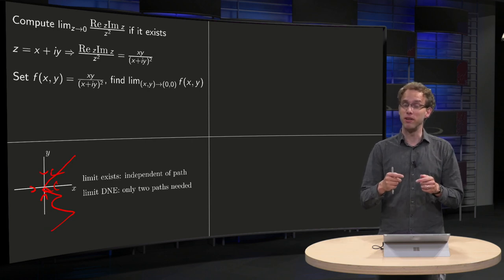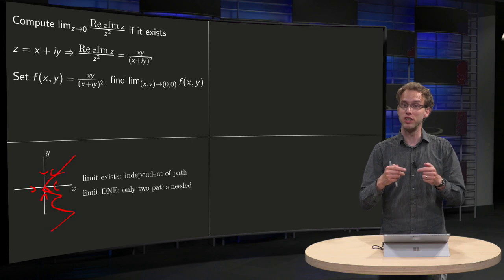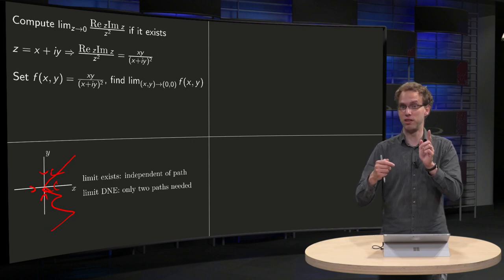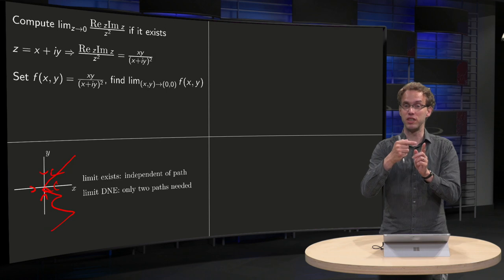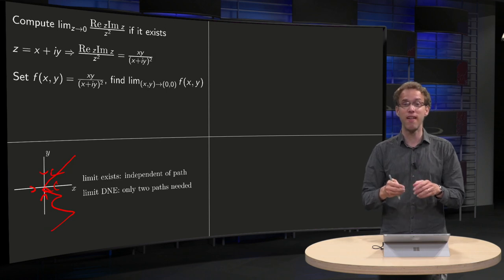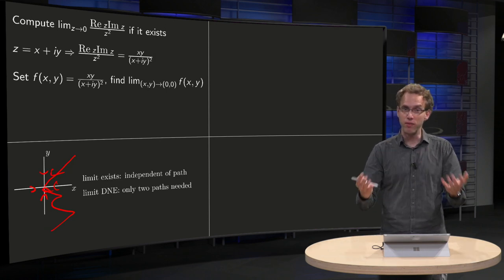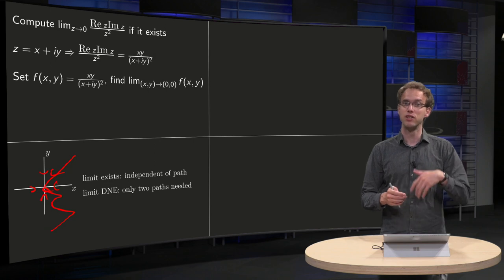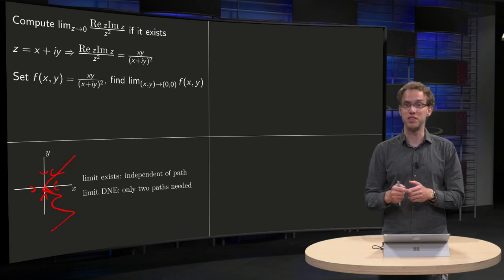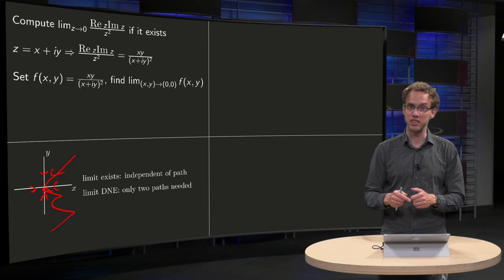But if we find only two paths which yields an unequal limit, so we have one path which yields 5 and another path which yields 7, not equal, then we know the limit does not exist. So showing that the limit doesn't exist is easier than showing that the limit does exist.